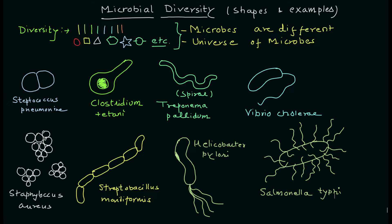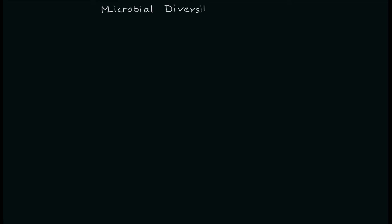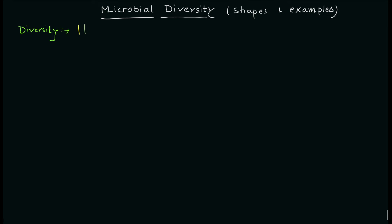I hope that you will like this video and understand what these organisms and the shapes of these organisms are. So let's start the video. I'll start by writing the topic which is microbial diversity. Microbial — you already know what we mean by microbial — means the organisms that are very, very small. The study of smaller organisms that we cannot see with the naked eye is microbiology.